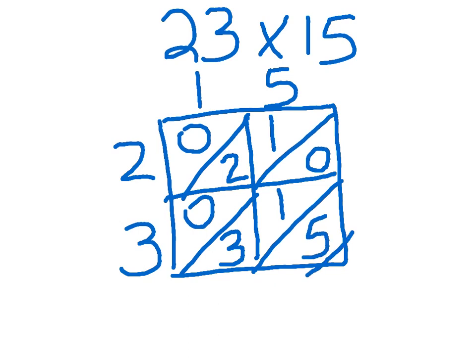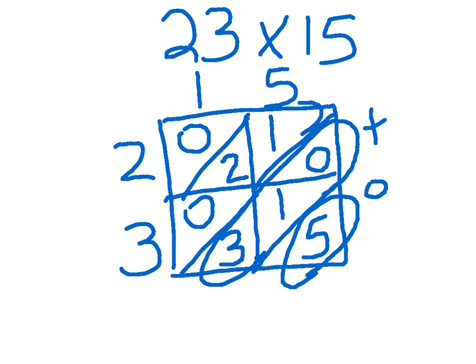At that point, each diagonal represents your different place value parts. This is the ones, this is the tens, this is the hundreds, and this would be the thousands if we had digits there.